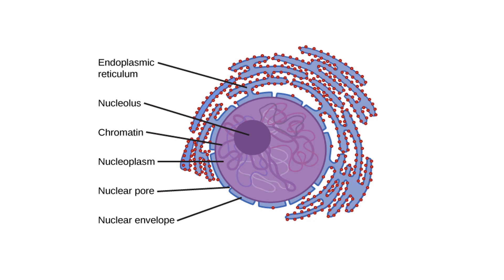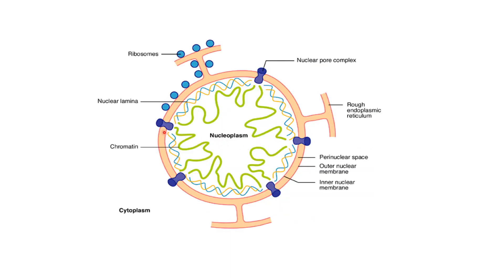Looking at the detail of the nuclear envelope: the nuclear envelope, or nuclear membrane, is made up of two layers — an outer layer and an inner layer. The outer layer is connected with the endoplasmic reticulum. When the inner and outer layers fuse with each other, they form pores called nuclear pores, which are responsible for the intake and outtake of material from the nucleus into the cytoplasm or from the cytoplasm into the nucleus. The space between the two membranes is called the perinuclear space.